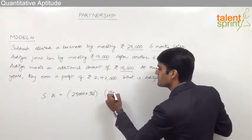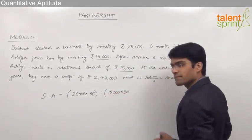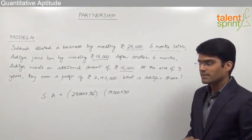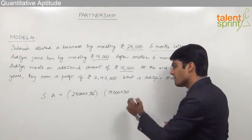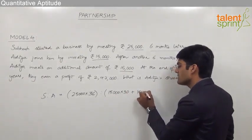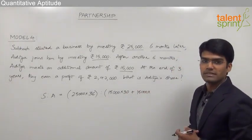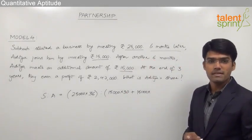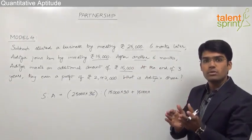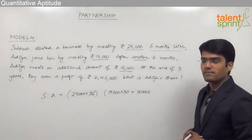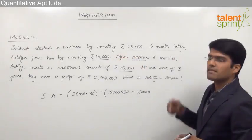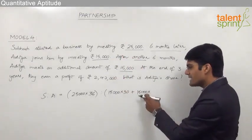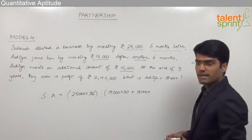So 15,000 was Aditya's investment for 30 months. Apart from this, Aditya also invested an additional 15,000 after another six months. That means this second investment of 15,000 was present only for 24 months, because Aditya was already late by six months and after another six months — a total gap of 12 months — he then invested 15,000 additional. So this 15,000 was in the business only for the next 24 months.